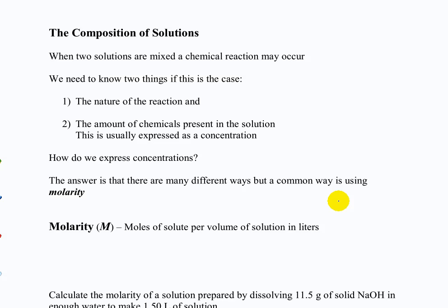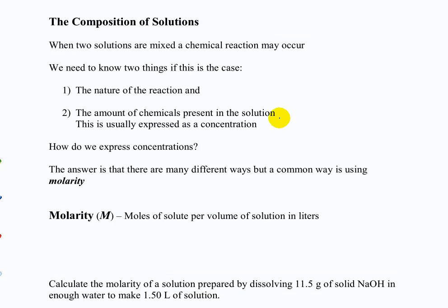So we're going to spend a little bit of time talking about how we express quantities in solutions and what it means for things to be in a solution, and how we can calculate that. It's easy if you have a solid — you can weigh it on the balance, get five grams, and convert those grams to moles. In solution it's a little bit different, because you can have a more concentrated or more dilute solution, so we need to know how to get those amounts.